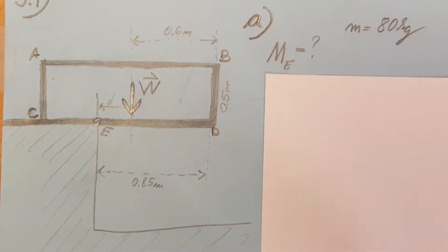All right, in this problem we have a crate positioned as you see it here on a ledge and it weighs 80 kilograms. They want us to find in part A the moment that the weight is producing around point E.